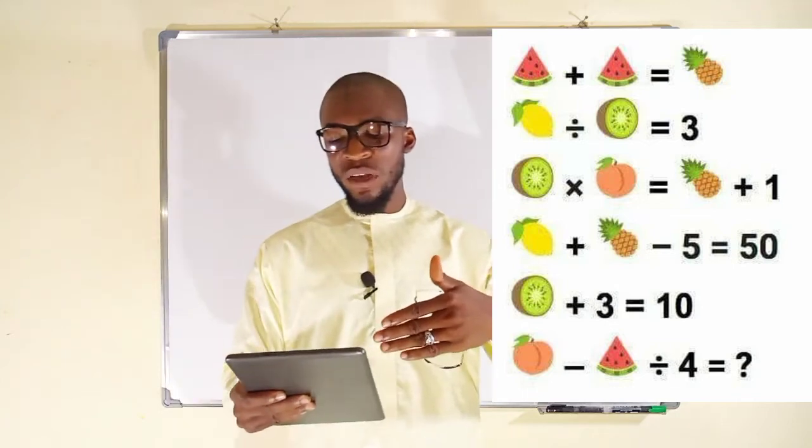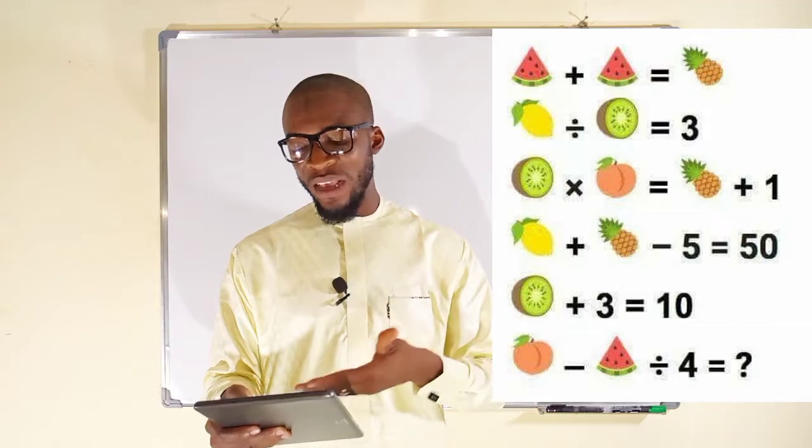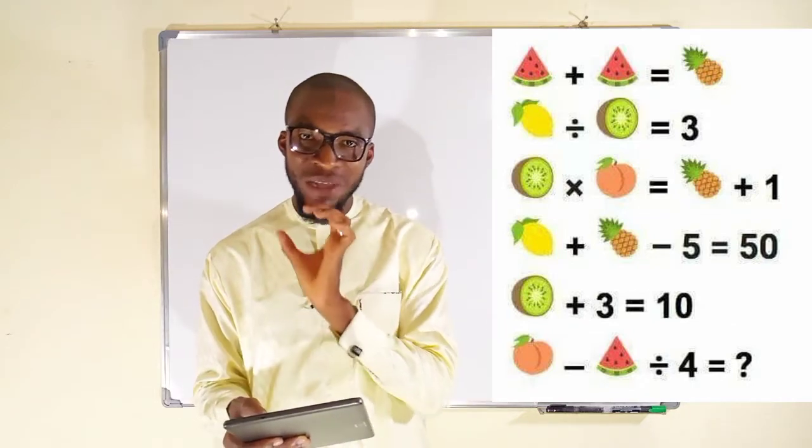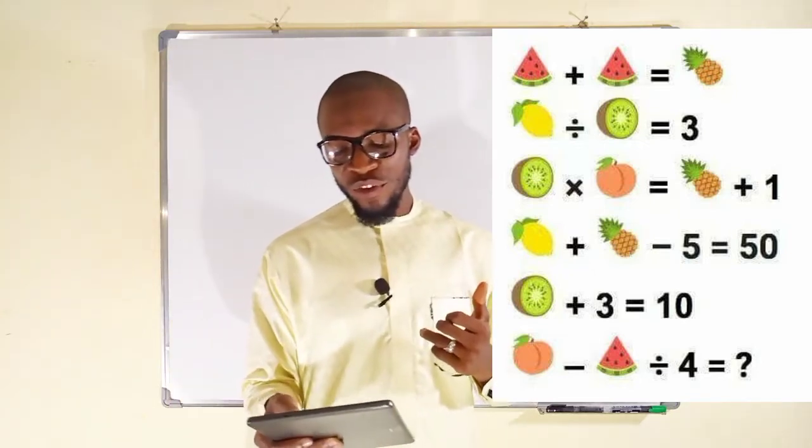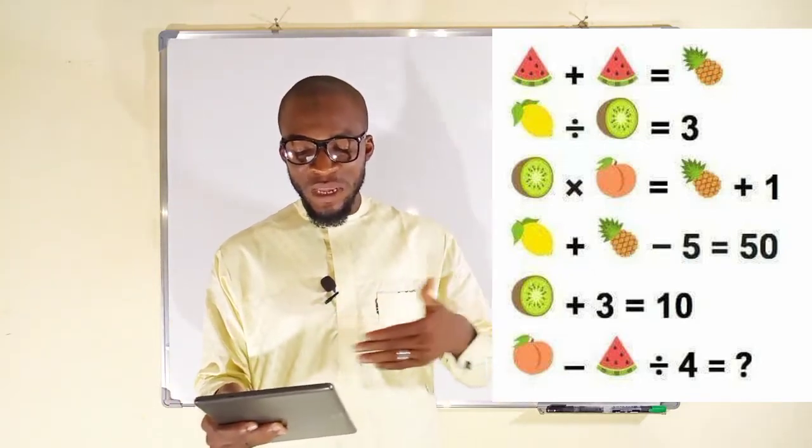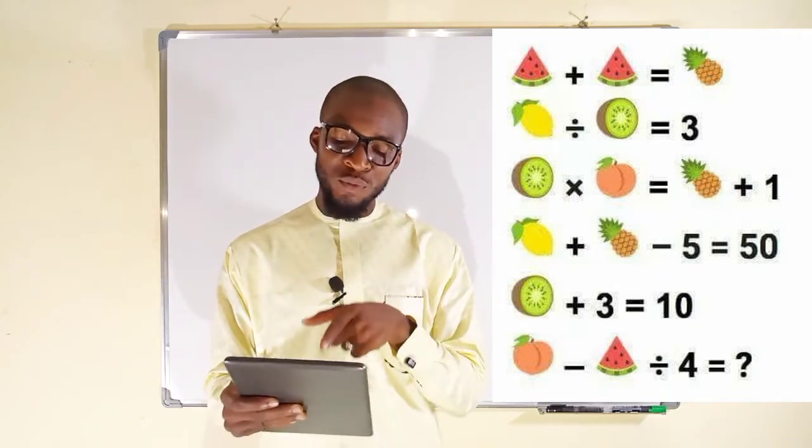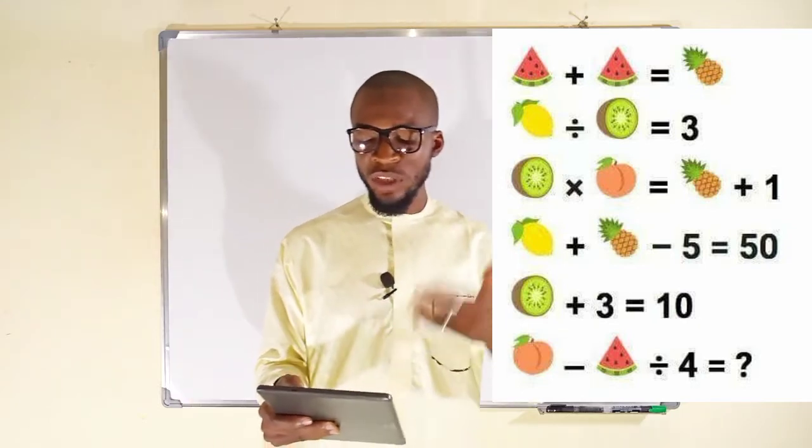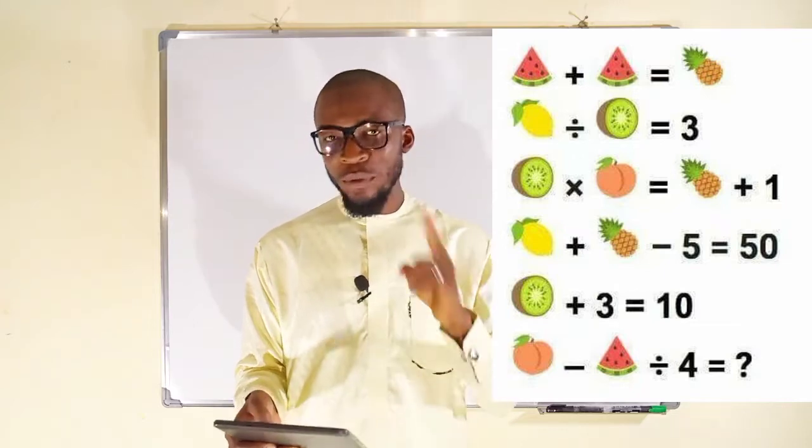The second equation you can see, it is a guiding egg that is divided by a slice of lemon to give rise to a real number three or a whole number three. The third equation you can see here, it is a slice of lemon multiplied by an apple. I can't really identify this fruit, but let us just assume it is an apple. A slice of lemon multiplied by an apple to be equal to a pineapple plus one.